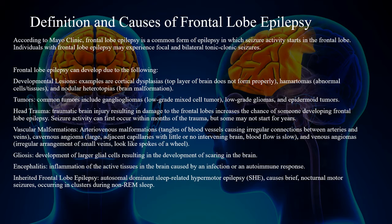Frontal lobe epilepsy can develop due to the following. Developmental lesions — examples are cortical dysplasias, in which the top layer of the brain does not form properly; hamartomas, or abnormal cell tissues; and nodular heterotopias, which is brain malformation. Tumors — common tumors include gangliogliomas, which are low-grade mixed cell tumors; low-grade gliomas; and epidermoid tumors.